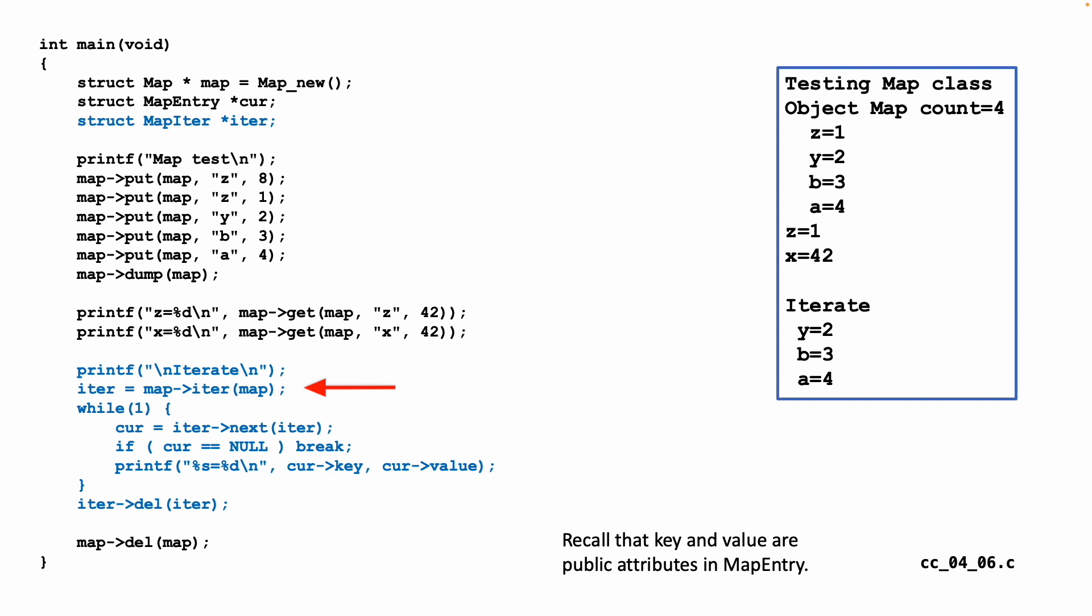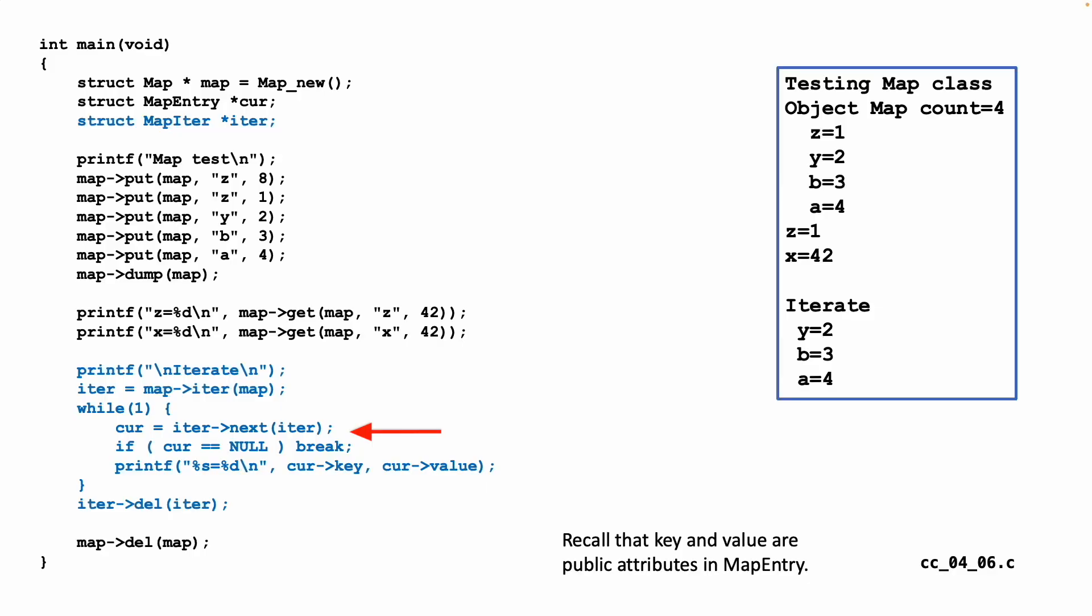And we don't know what's in the iterator. We don't need to know what's in the iterator. The only thing we need to know is it has a method called next. That's it. So we're basically saying, let's get started. Give me an iterator from the map. Call the iterator method, passing the map instance as a parameter, and give me back iterator.